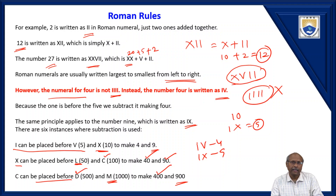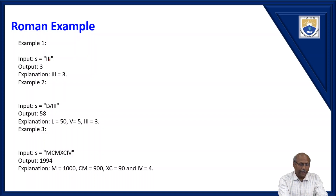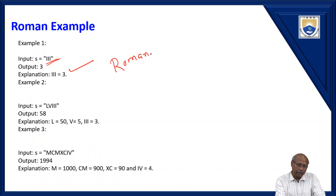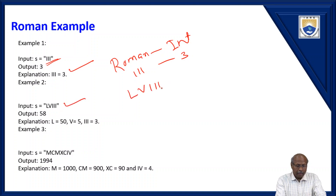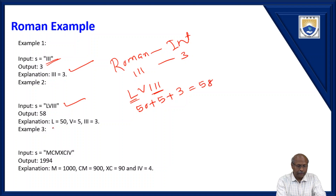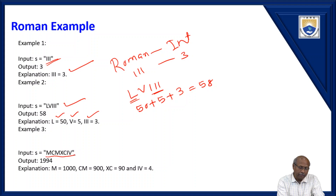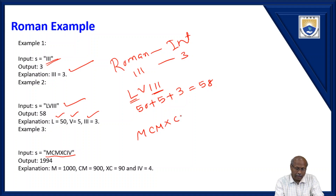This is the way Roman numbers are evaluated. For example, III means value 3, so you are converting the Roman number to integer. Similarly, LVIII: L is 50, V is 5, three I's is 3, so the answer is 58. Now another example: MCMXCIV.